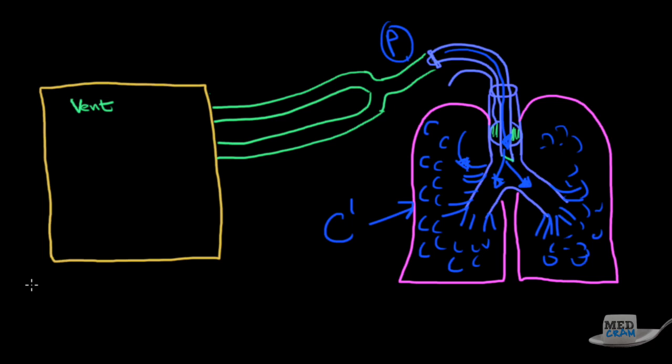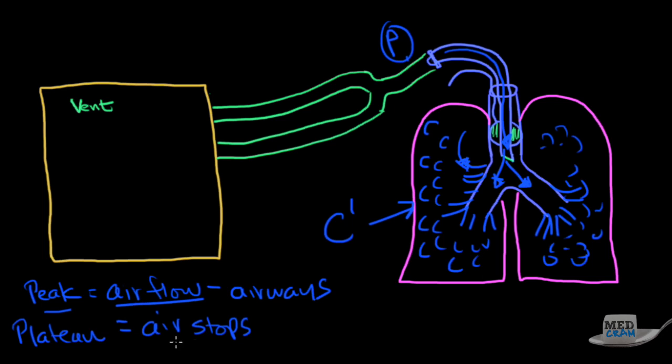There's two things that you'll see on pressure. There's a peak pressure and the peak pressure is when there is air flow. And then there's something called the plateau pressure and that is when the air stops. The air flow, the peak pressure has to do with the airways. The plateau pressure, when the air stops, has to do with lung compliance.